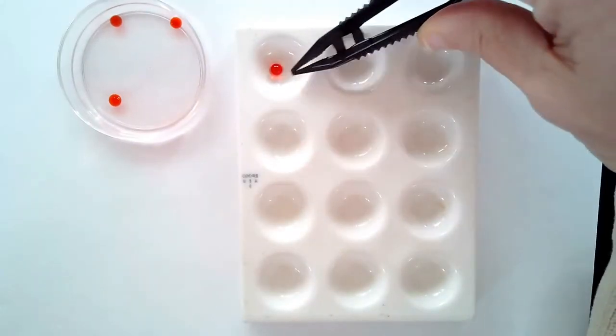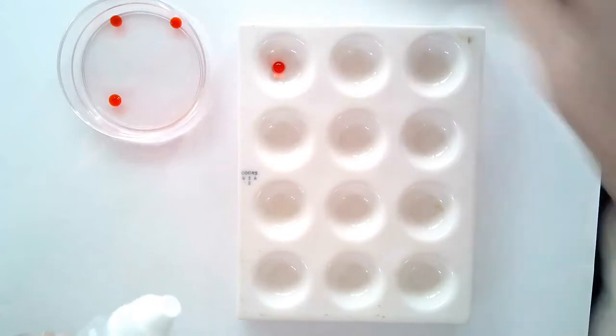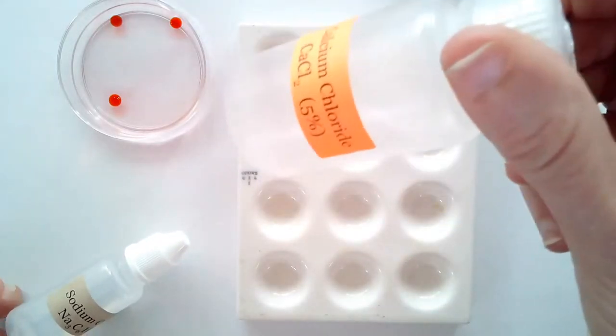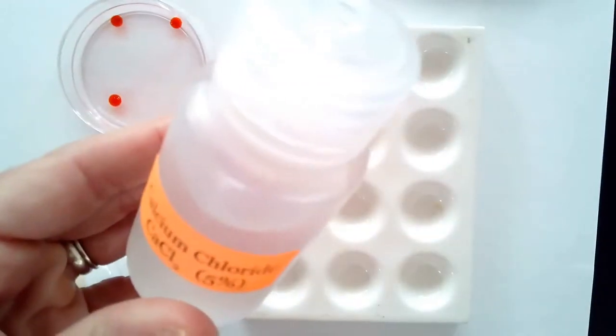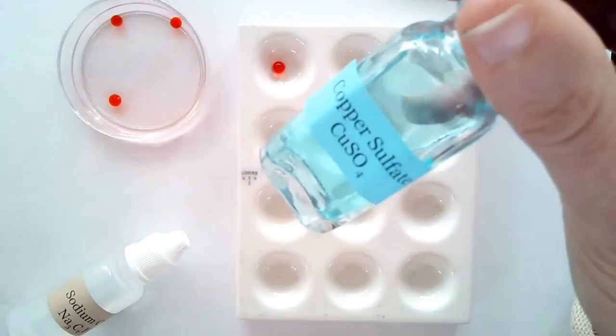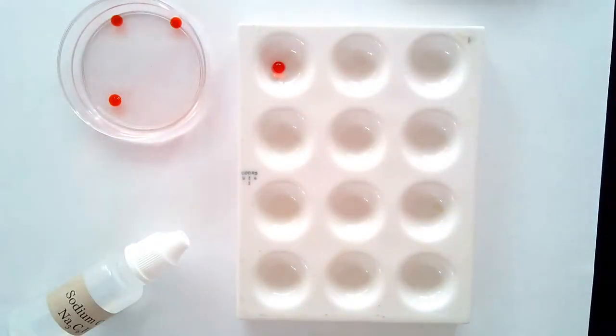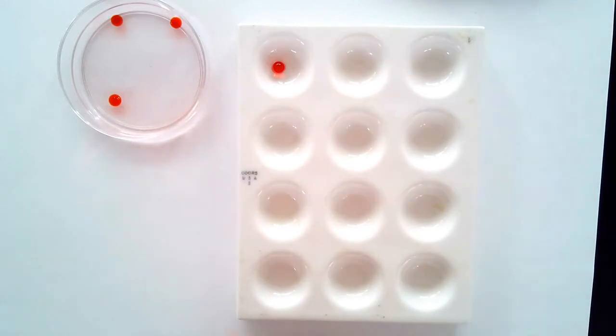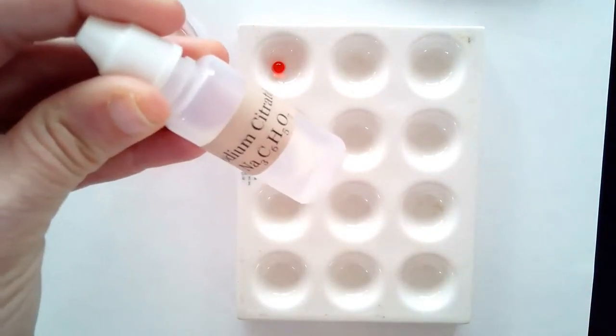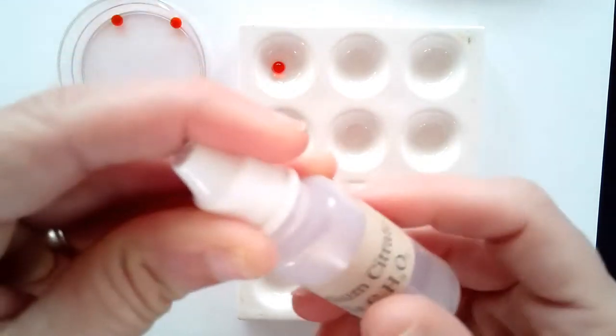You will take beads created using calcium chloride, and as you found out in an earlier lesson, you can also use copper sulfate to make beads. You will be testing both and you will see how these beads react when you add sodium citrate. To do that, you will put the bead in a spot plate and then you will add the sodium citrate.